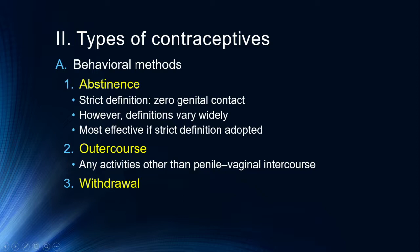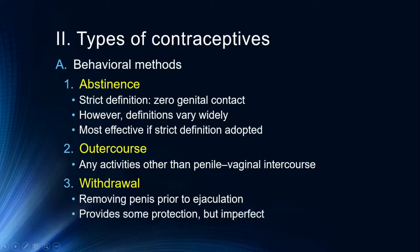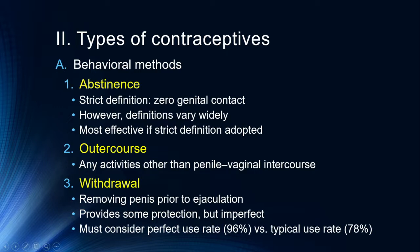Withdrawal, or pulling out, is where a man removes his penis prior to ejaculation. It provides some protection but it's imperfect — pre-ejaculate does include sperm, so this is a bit of a crapshoot, though it's better than nothing. The biggest problem is not all men are particularly good at timing and controlling when this happens. The perfect use rate is about 96% effective, but perfect use is almost impossible to obtain. Typical use rate is about 78% effective, so two out of ten times this will result in pregnancy.